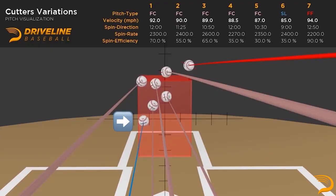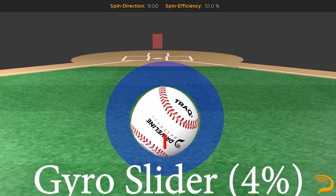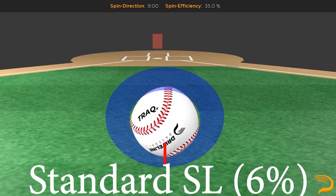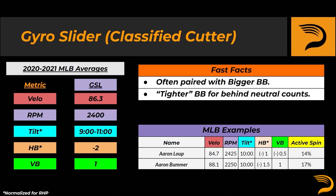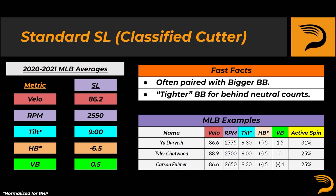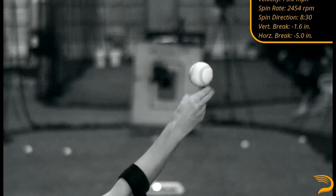For the cutter, we will actually reverse course a bit relative to our other breaking ball profiles. We're going to start from the bottom of the movement chart — meaning something closer to a slider — and work our way up to more of our back spinning cutters. Since 2020, about 10% of classified cutters had movement characteristics that actually resembled that of a traditional slider, with about half of them being gyro sliders and the other half being standard sliders. The average gyro and standard slider league-wide is about 85 miles per hour, but when classified as cutters, they were thrown on average about 86.5 miles per hour. They aren't entirely common, and usually find themselves in arsenals that have bigger breaking balls — whether that be an efficient curveball or a sweeper. Some pitchers may simply utilize the pitch as a tighter breaking ball for behind or neutral count contexts.